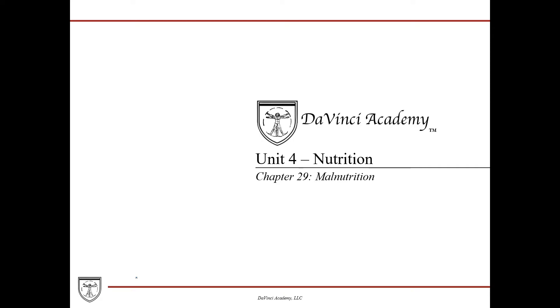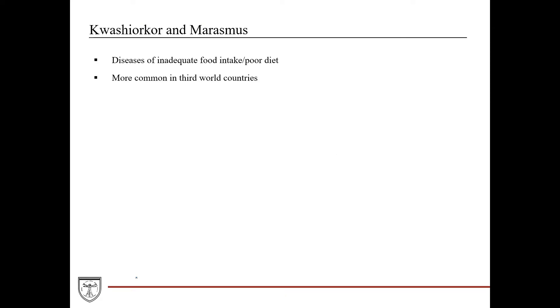In this lecture we're going to talk about malnutrition and the two main types we'll focus on are kwashiorkor and marasmus. These are diseases of inadequate food intake and poor diet, more commonly seen in third-world countries, very rare in developed countries, and unfortunately often more commonly seen in children.